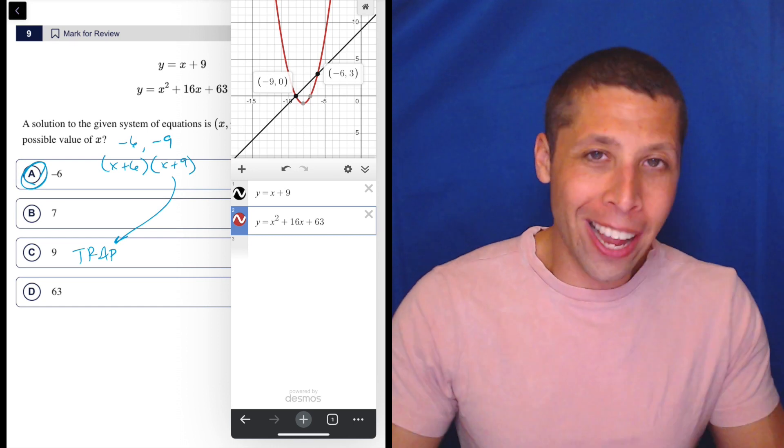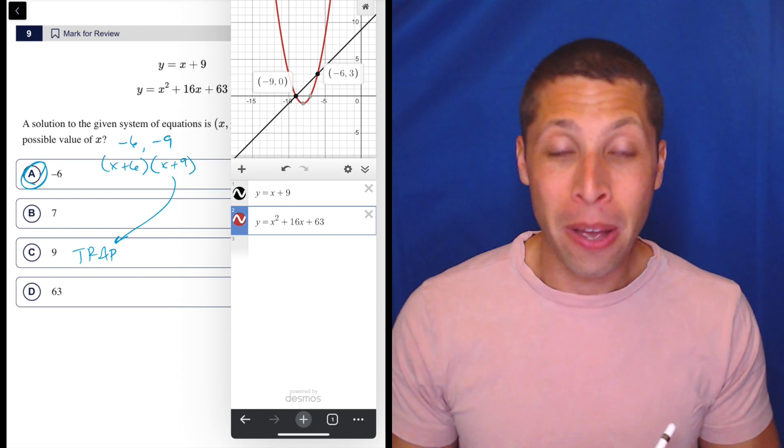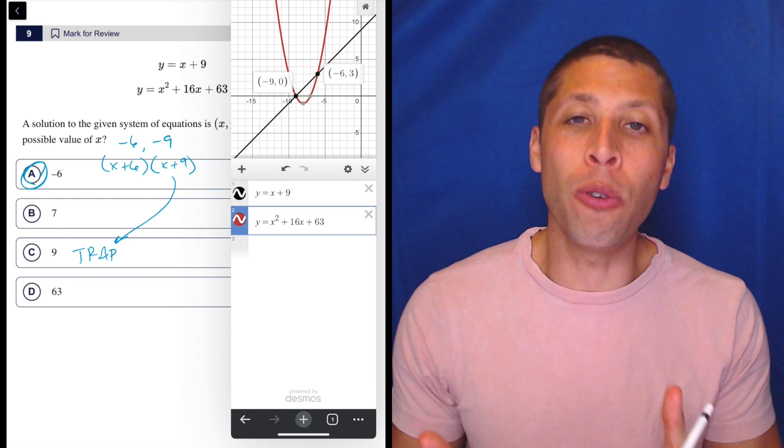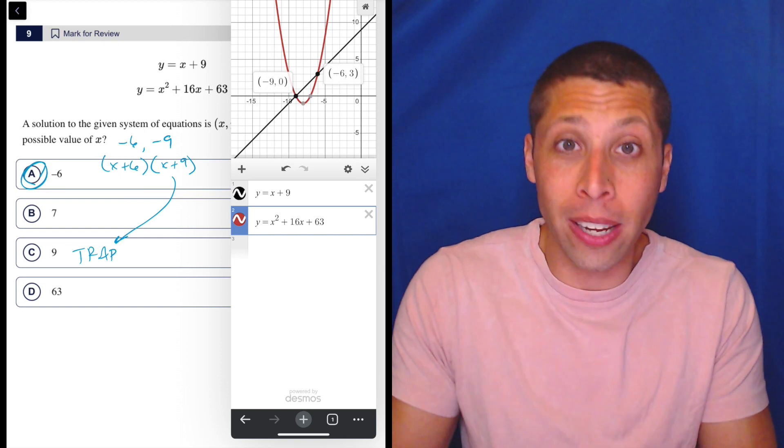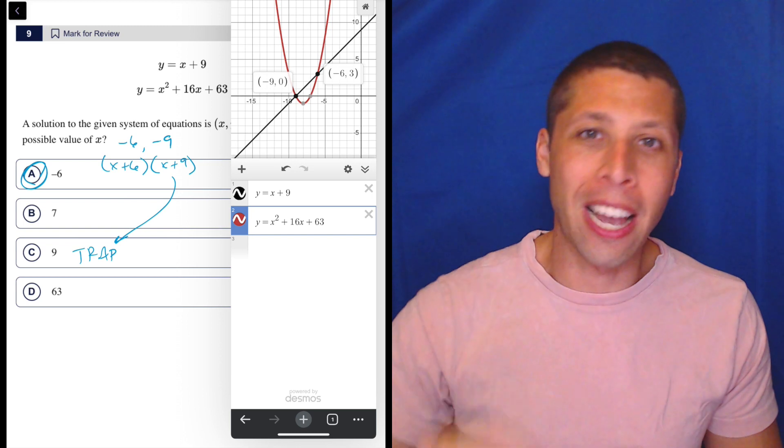So this is why algebra is so risky. If you have one little slip up, one thing gets past you, that's it. The answer that you think it's going to be, the wrong answer is going to be there, and you'll never know,